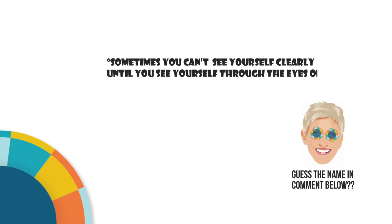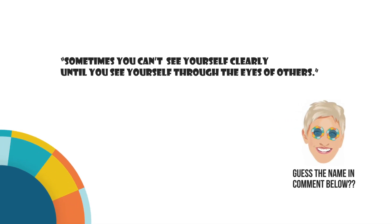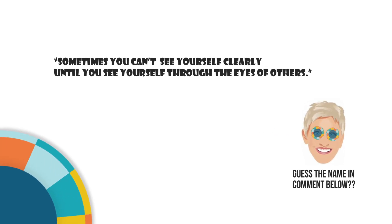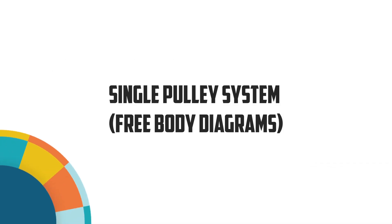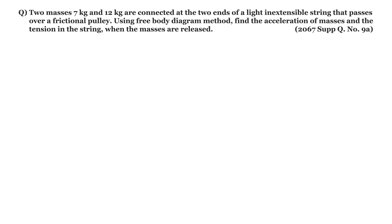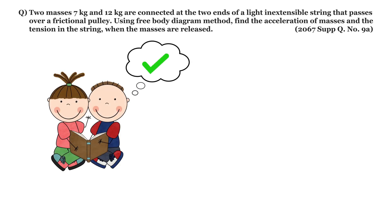Hello and namaste everyone, welcome to my channel Sigma X. Today we are learning about solving the numerical problem related to a single pulley system. Two masses, 7 kg and 12 kg, are connected at the two ends of a light inextensible string that passes over a frictionless pulley. Using the free body diagram method, find the acceleration of masses and the tension in the string when the masses are released.